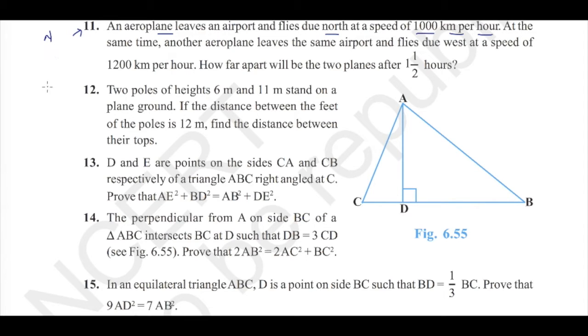North, south, east and west. There is an aeroplane which flies towards north at 1000 km per hour speed. At the same time, another aeroplane leaves the same airport and flies due west. Let us call the first aeroplane as A, second aeroplane as B and starting point as S at the speed of 1200 km per hour.